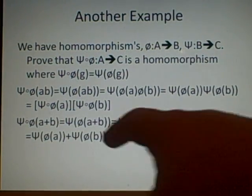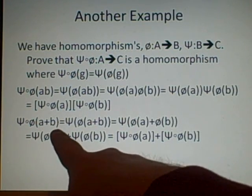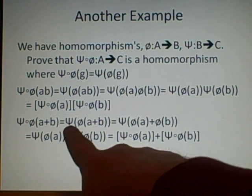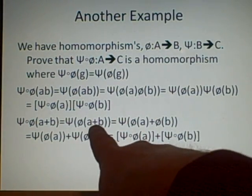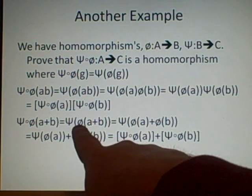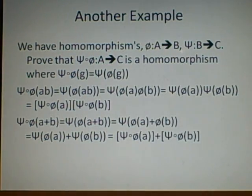And now we need to do addition. So sigma composed with phi of a plus b is, again, we can put it into this form, which they've given us here. And because it's a homomorphism, it means we can add them. So phi of a plus b will be equal to phi a plus phi b, because it's a homomorphism, remember.